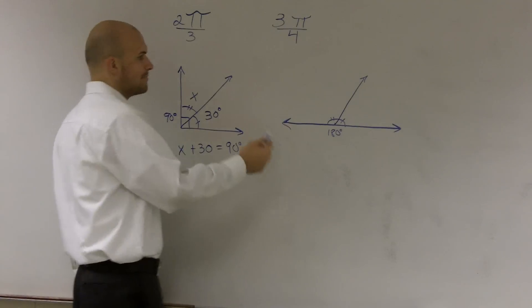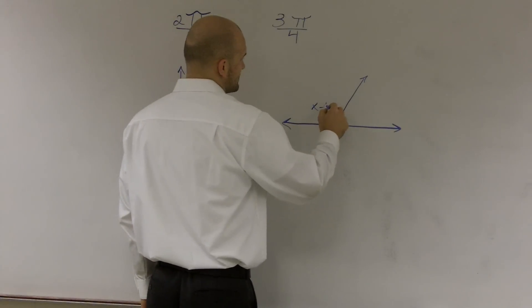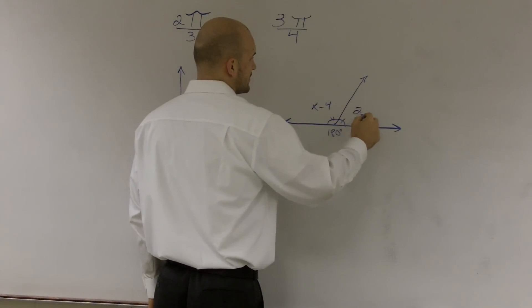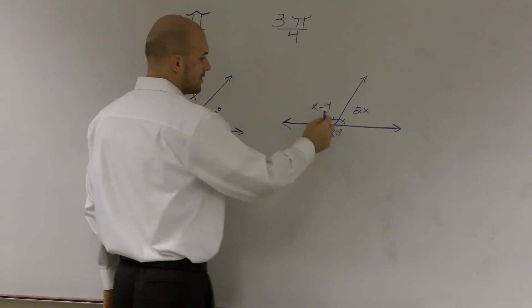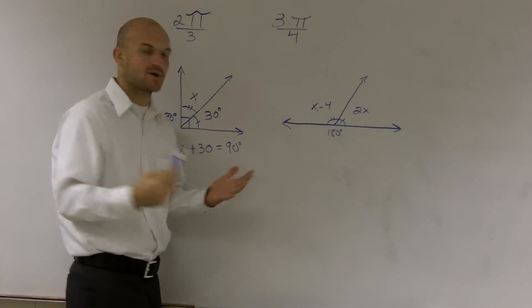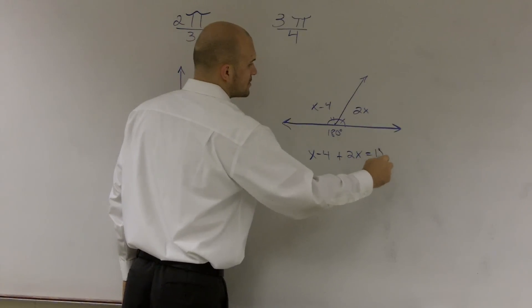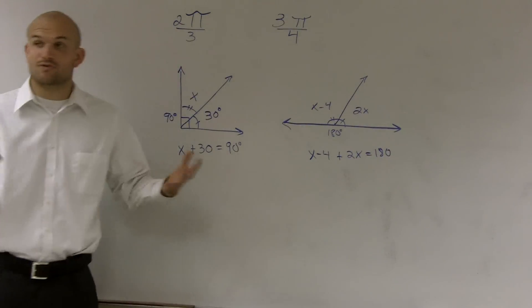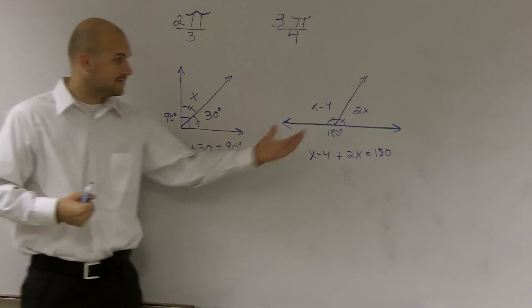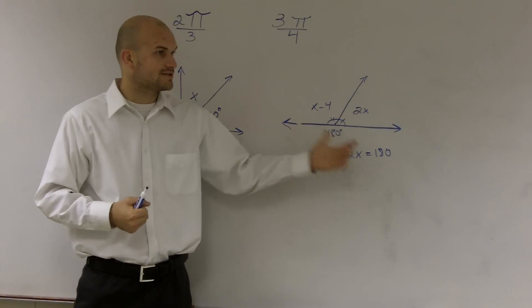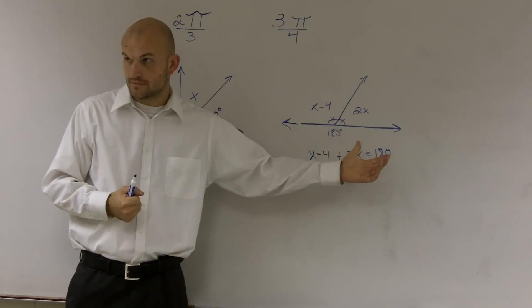And then we even got more complicated. We said, like, x minus 4 and this is, like, 2x. And you said, well, it doesn't really matter because you can still write the formula x minus 4 plus 2x equals 180. We could write that statement. These two angles plus these two angles added together equals 180.